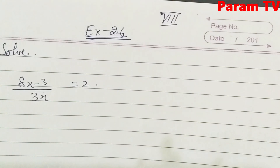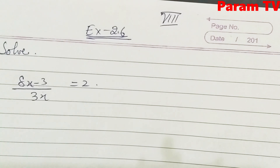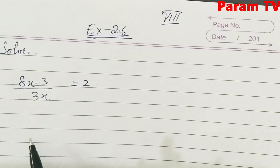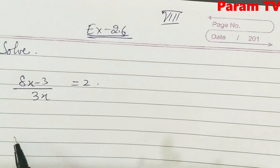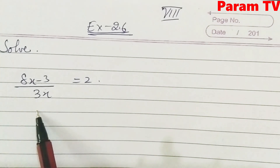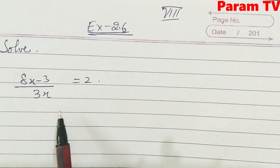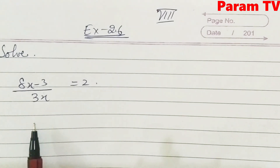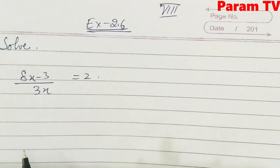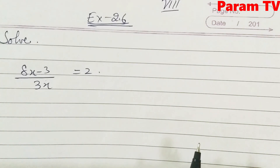Hello everyone, welcome to my class. This is Exercise 2.6 — Linear Equations in One Variable for Class 8. This is the last exercise of this chapter. Let's solve these equations. The equations are given in numerator and denominator form, but the rules are the same: we solve them by transposing, then collecting like terms, and finally giving the answer to the variable.